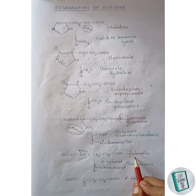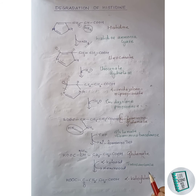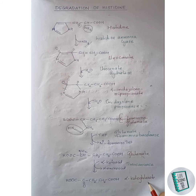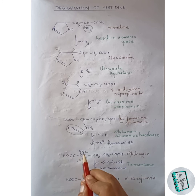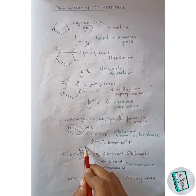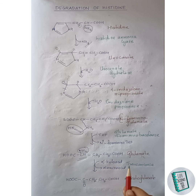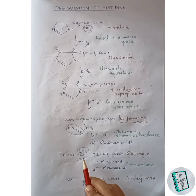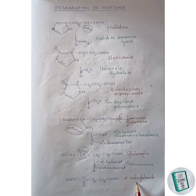This glutamate then undergoes transamination in the presence of transaminase enzyme to form alpha-ketoglutarate. The NH2 group is accepted by an alpha-keto acid, and a keto group is generated at that carbon. This is alpha-ketoglutarate, completing the degradation of histidine.